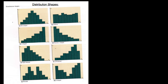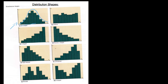Starting with this first top-left one here — the bell-shaped curve, or anything that's somewhat bell-shaped. We call it bell-shaped because, if you look at it, it kind of looks like a bell, like the kind you would ring.